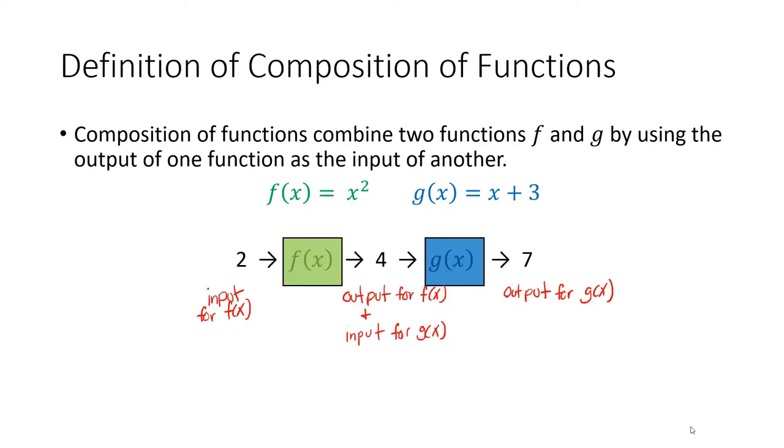So let's say 2 is the input for f(x). So we plug in 2 into the x, we get 2², which gives us 4. So 4 is the output for f(x), and now we're going to use that for the input for the second function. So plug in the 4 into g(x), we get 4 + 3, which is 7. So the final result, when we plug in the 2 as our original number, our output is 7.